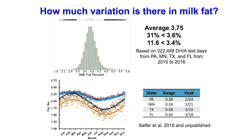How much variation is there in milk fat? This is data over six years from Texas, Minnesota, Florida, and Pennsylvania. Average herd milk fat was 3.75%. About 30% of herds are below 3.6, and 11% are below 3.4 — a lot of variation in milk fat between herds and a lot of potential to have an impact. We've also recently published data on seasonal rhythms — highest milk fat January 1, lowest July 1, and highest milk yield occurring in late March around the equinox, lowest milk yield in September. Quite a bit of variation, with potential interactions throughout.